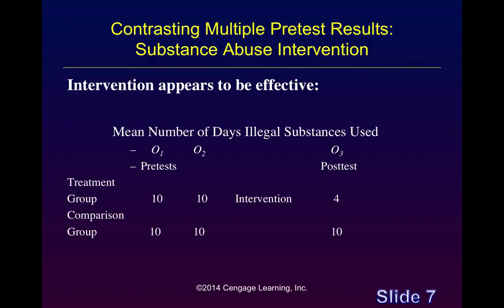In the same scenario but with different results, it looks as though our treatment was in fact effective. At both the first and second pretest measurements, the treatment and comparison groups remain roughly equivalent. Then after receiving the intervention, the treatment group drops to 4 compared to the comparison group, which remains at 10. Because both groups were stable before the intervention, the drop is more attributable to the treatment.